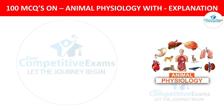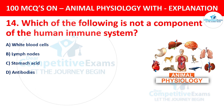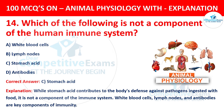Question number 14. Which of the following is not a component of the human immune system? The options are white blood cells, lymph nodes, stomach acid, or antibodies. The correct answer is C, stomach acid. While stomach acid contributes to the body's defense against pathogens ingested with food, it is not a component of the immune system. White blood cells, lymph nodes, and antibodies are key components of immunity.